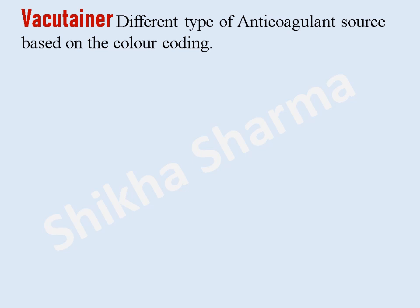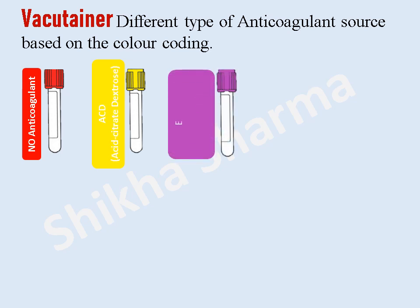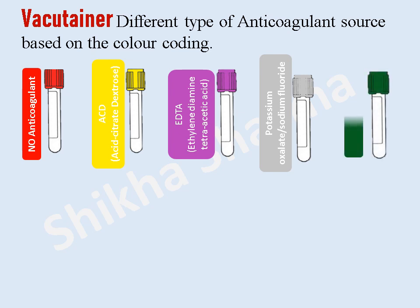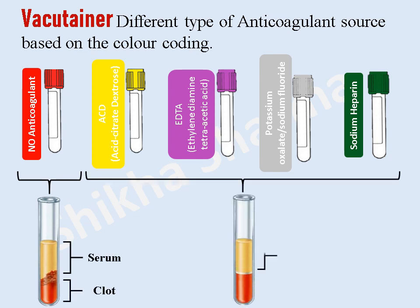Each vacutainer contains one type of anticoagulant. We recognize the type of anticoagulant present with the help of color coding. For example: red cap vacutainers are plain vials having no anticoagulant; purple top vacutainers contain ethylenediamine tetra acetic acid (EDTA) as an anticoagulant; yellow cap vacutainers contain acid citrate dextrose anticoagulant; gray cap vacutainers contain potassium oxalate or sodium fluoride; and dark green top vacutainers contain sodium heparin.